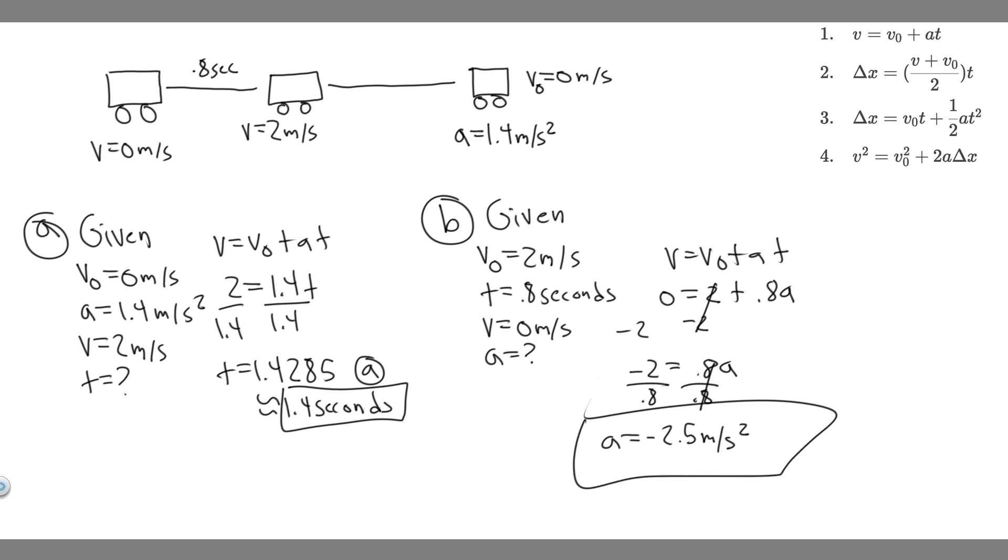But, yeah, so basically that's going to be your answer. So minus 2.5 meters per second squared for B. And then A was 1.4 seconds. So these are your answers, and hopefully you found this useful.